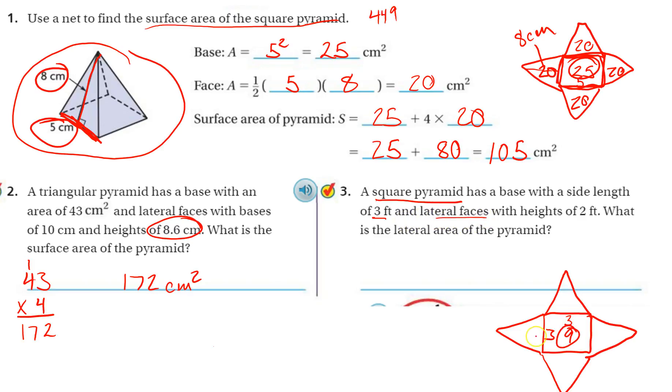And lateral faces. Lateral faces just means the sides, right? Not the ceiling, not the floor, just the walls around you. That's the lateral faces, the walls around you, with heights of 2 feet. So the height is 2, and the base is 3. What is the lateral area of the pyramid? So I'm not including the base. I'm only counting the walls, the sides of the pyramid.